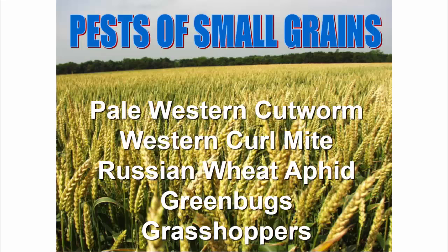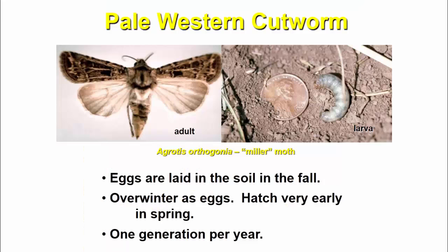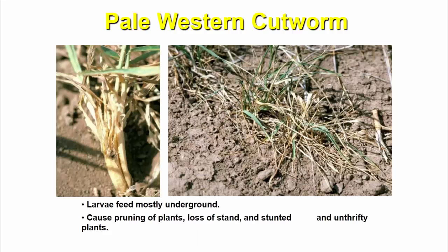For small grains, pests include pale western cutworms, western cut mites, Russian wheat aphid, green bugs, and grasshoppers. For pale western cutworms, adults and larvae are shown. Eggs are laid in the soil; they overwinter as eggs. In spring, larvae emerge — one generation per year. Larvae feed mostly underground, causing pruning of plants and loss of stand, with 30–50% plant mortality possible.